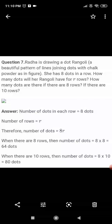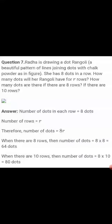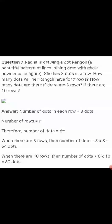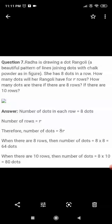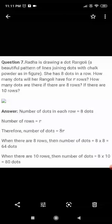When there are 8 rows, substitute r equals 8: the number of dots equals 8 multiplied by 8, which is 64 dots. When there are 10 rows, substitute r equals 10: the number of dots equals 8 multiplied by 10, which is 80 dots.